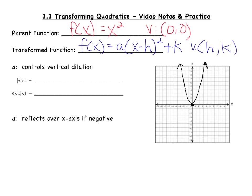Now, if you have studied absolute value functions or any other functions, the a, h, and k values should look familiar to you. In functions, it's always x minus the h value. So if your h value is negative, that would be x minus negative h, which simplified would be x plus h. I always tell my students: if you see x minus h in the parenthesis, your h value is actually positive. And if you see x plus h inside the parenthesis, your h value is actually negative.